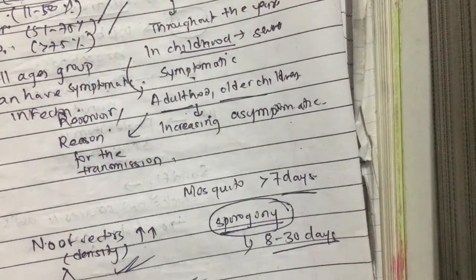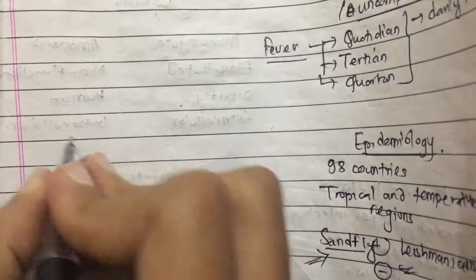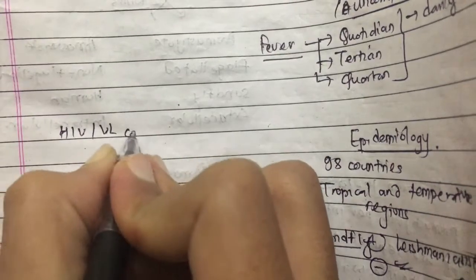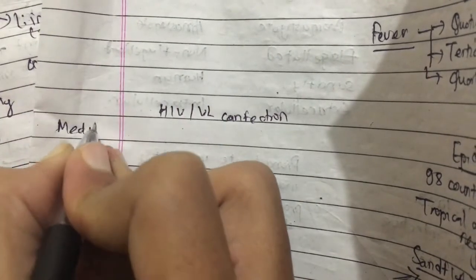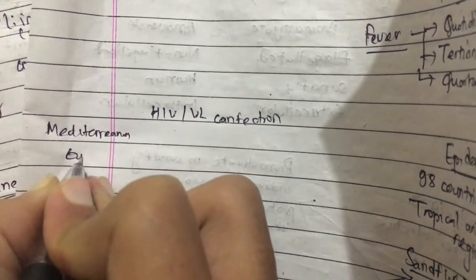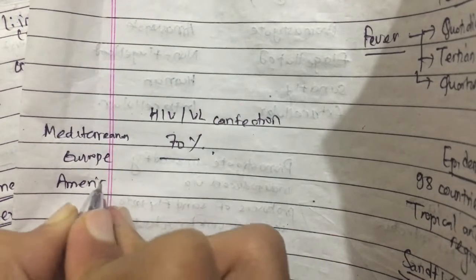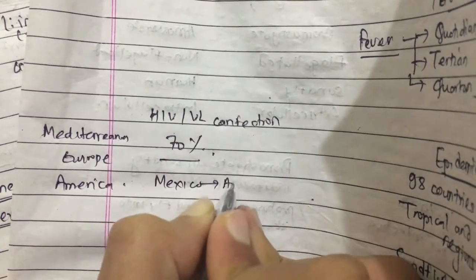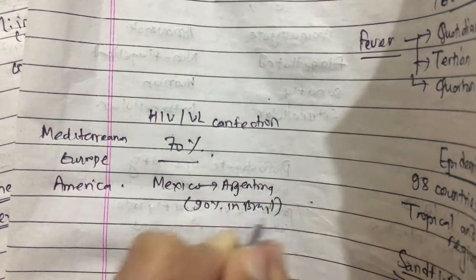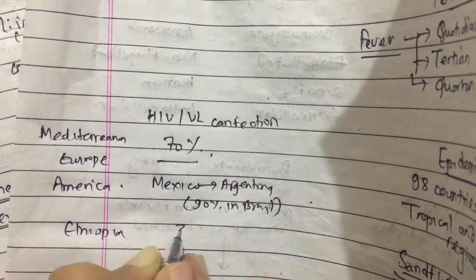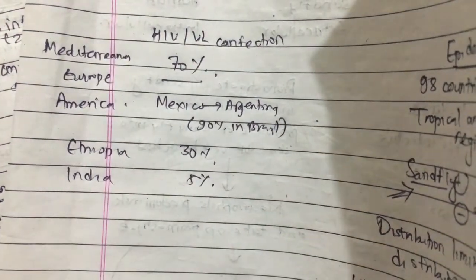Regarding the epidemiology of HIV and visceral leishmaniasis co-infection: in Mediterranean Europe it is about 70 percent; in the Americas it is mostly found from Mexico to Argentina, with 90 percent in Brazil; in Ethiopia it is about 30 percent; and in India it is about 5 percent.